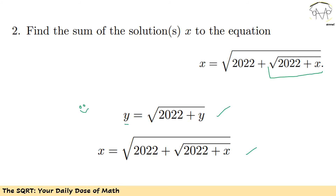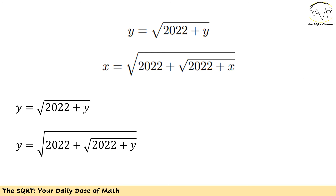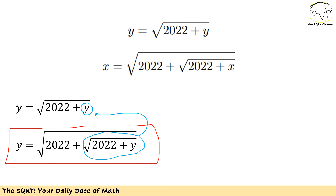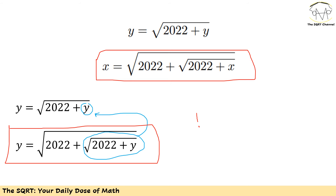I claim these two equations have the same solutions. If y satisfies y = √(2022 + y), I can substitute y back inside itself to get y = √(2022 + √(2022 + y)), which is exactly the equation for x. So x and y have the same solutions.